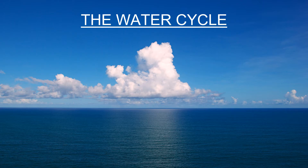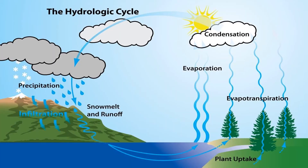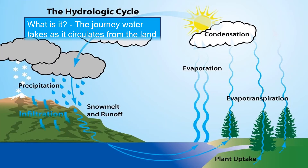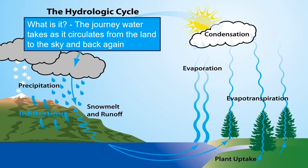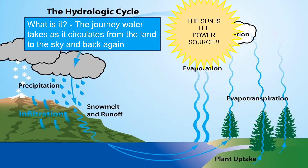Our next stop is the water cycle, also called the hydrologic cycle. What is it? It's the journey water takes as it circulates from the land to the sky and back again. The sun is the power source of this cycle.